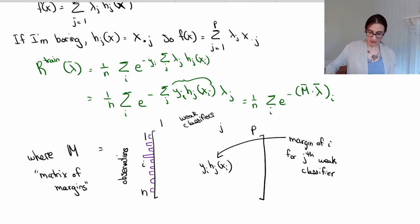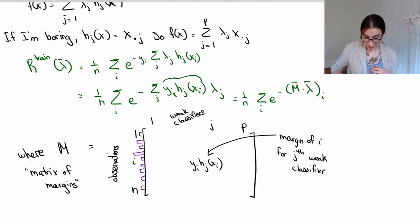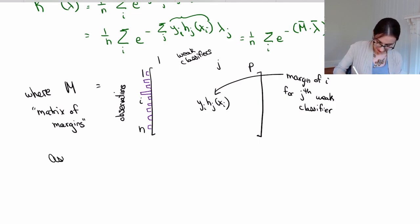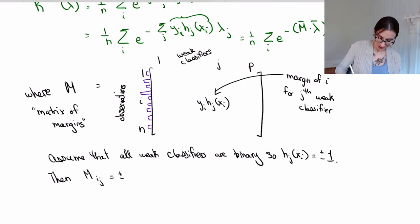Now we're going to assume that everything in this problem is binary. So the data, all of the data points live on a hypercube. In reality, the data can be whatever they want. But because I'm boring, and I want my weak classifiers to have binary entries, then I'm going to force all of the data and therefore the weak classifiers to have binary entries. So I'll just write down here, assume that all weak classifiers are binary. So hj of xi are either plus or minus one. So then that allows the matrix entries to be plus or minus one.